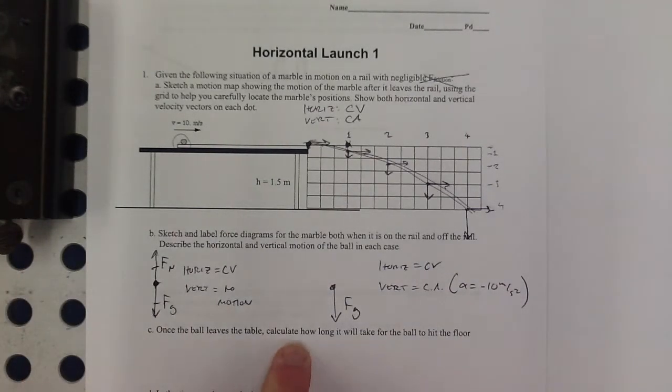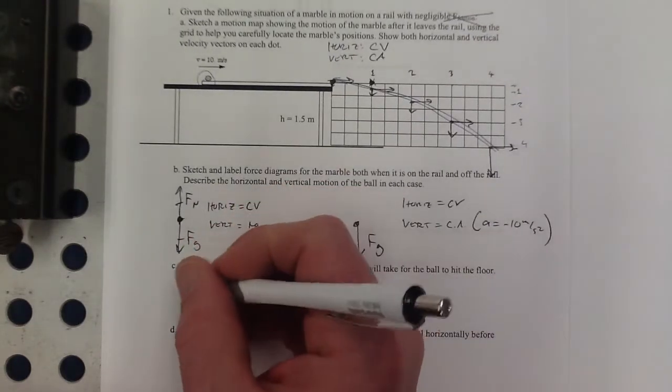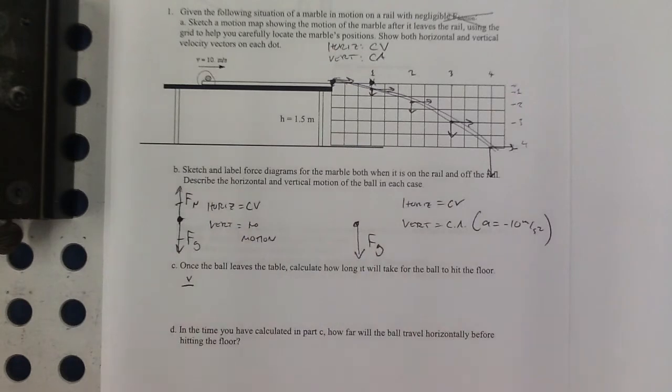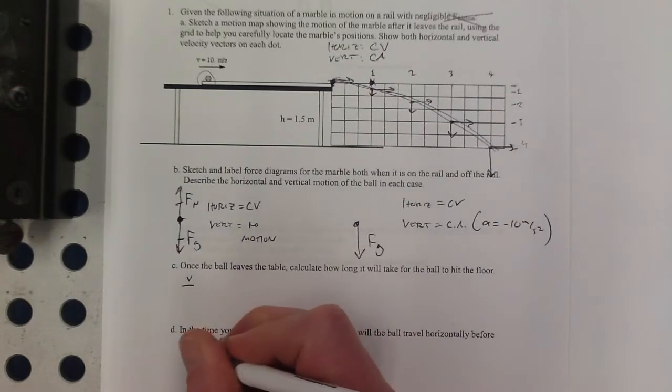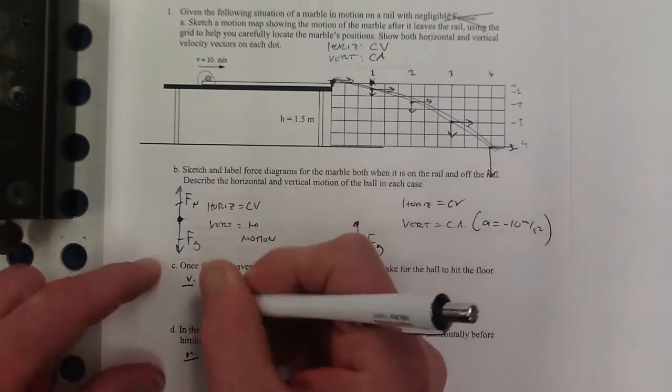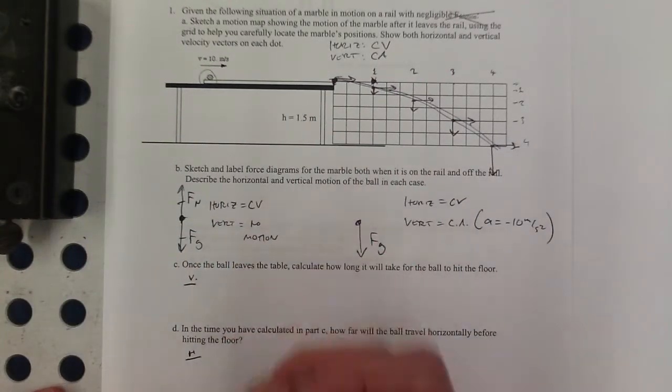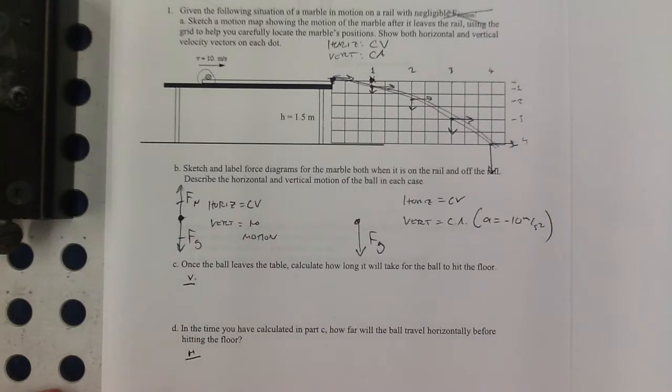Once the ball leaves the table, calculate how long it will take for the ball to hit the floor. So that's going to come from setting up the vertical part. And this is going to come from setting up the horizontal part. So in a lot of problems, I like to set these two things up, the vertical and the horizontal next to each other. But here, since it's split up this way, I'll do that horizontal down here.